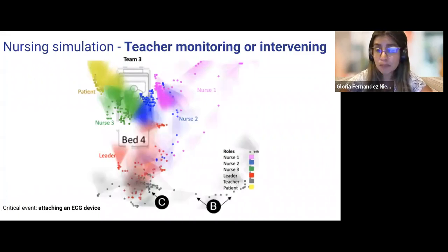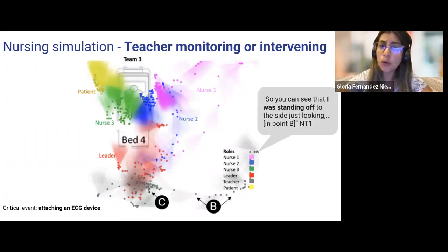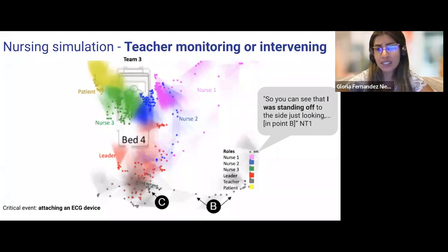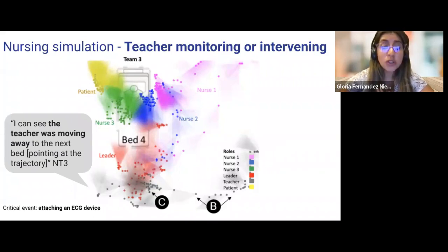When teachers explore the classroom dandelion, they change their initial interpretations by indicating that at point B, the teacher was standing there just looking, whereas at point C, he may have come over to briefly say something. And they can see the teacher was moving away to the next step, pointing at the trajectory.